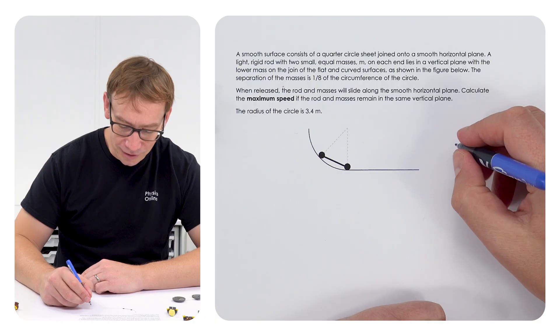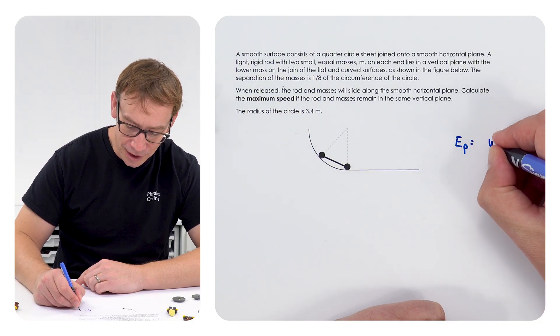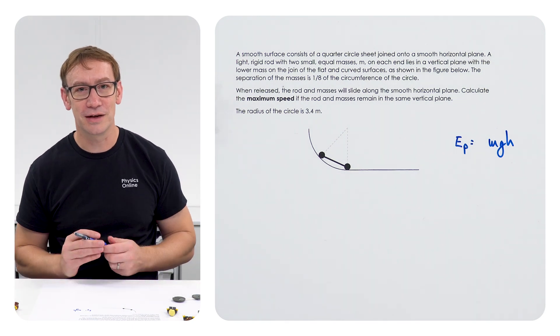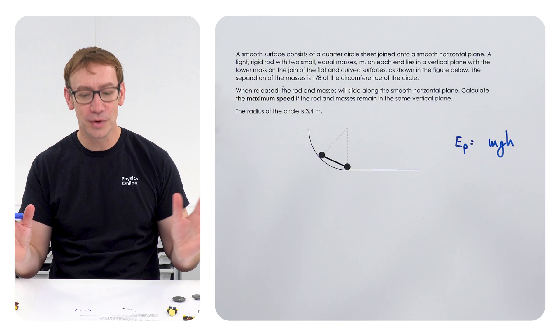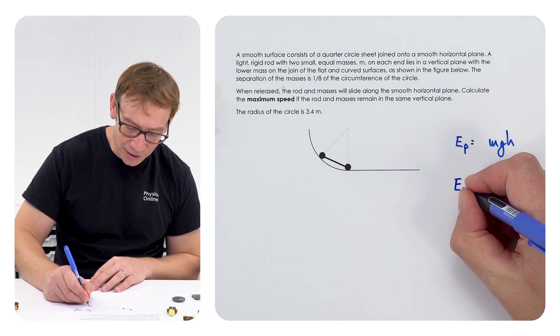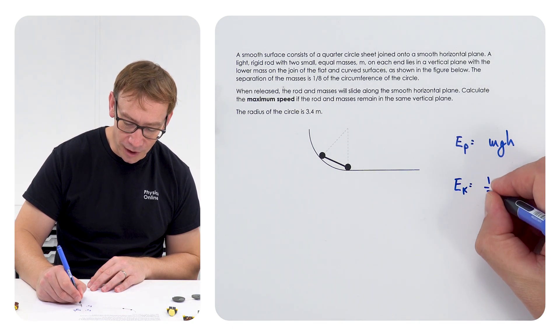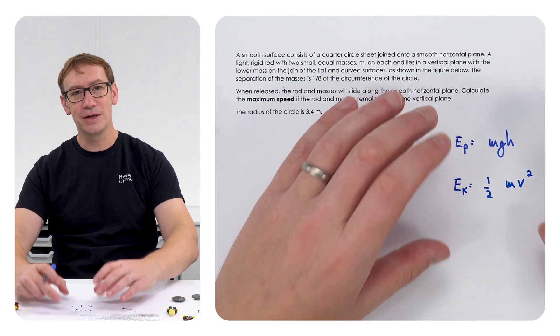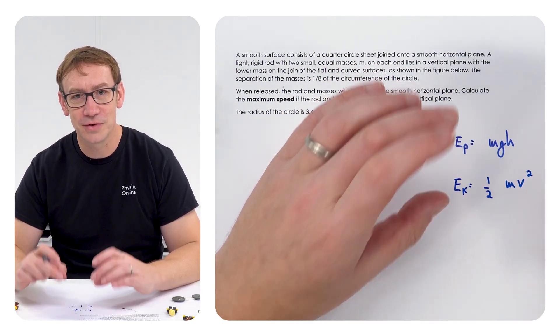The first bit of GCSE you need to know is that we can calculate the gravitational potential energy, and that's using the equation GPE or EP equals MGH. That's the initial energy stored in that system. Afterwards we've got something moving, so the kinetic energy EK equals half M times V squared. So at the moment two bits of simple GCSE physics.